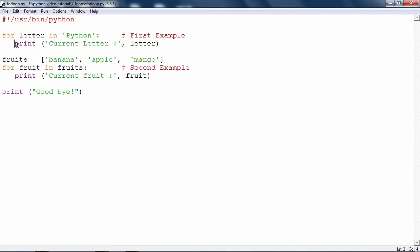So, this is the body of the loop which will execute for each character in the string. So, the output that you expect is current letter p, current letter y, current letter t and so on.